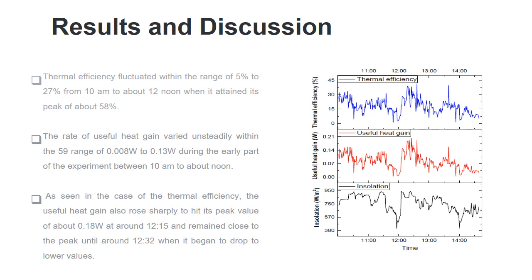The rate of useful heat gain varied unsteadily within the range of 0.08W to 0.13W during the early parts of the experiment between 10 to about noon.